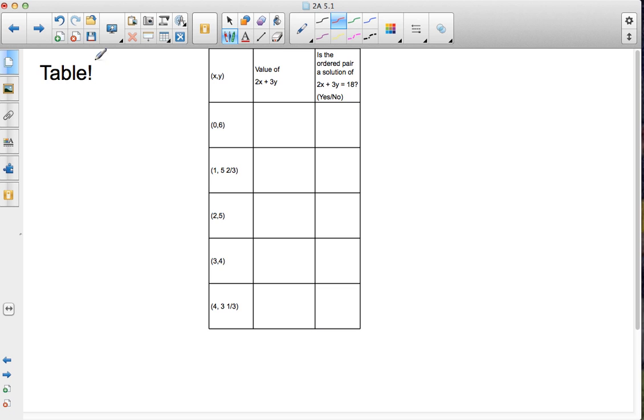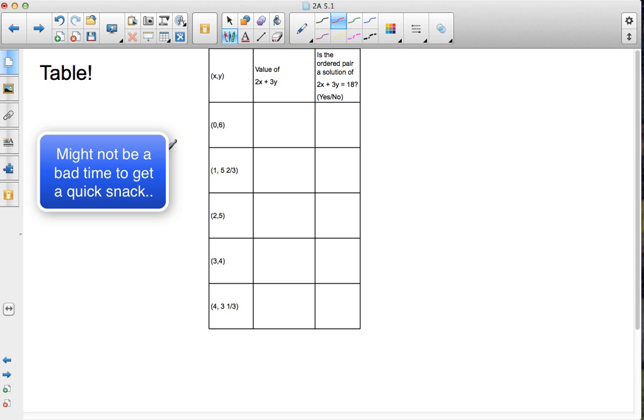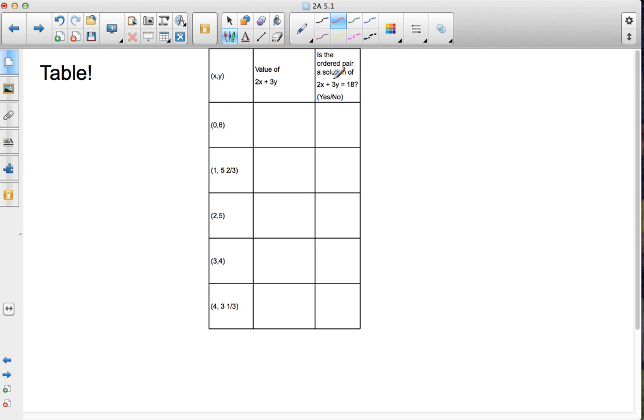Let's take a look at a table here. You can go ahead and complete this table, copy and complete this table on your own, or you can watch me. But what I'm going to do is check these different values, these different points to see if they're a solution of the line 2x plus 3y equals 18.